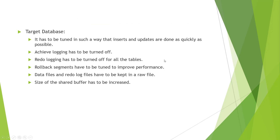Next we'll talk about the target database. It has to be tuned in such a way that inserts and updates are done as quickly as possible. For that, we'll have to turn off the archiving log, and the redo log also has to be turned off for all the tables. Rollback segments have to be tuned to improve performance. Data files and redo logs have to be kept in a different raw file, which improves the performance.